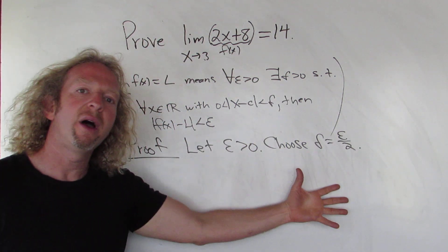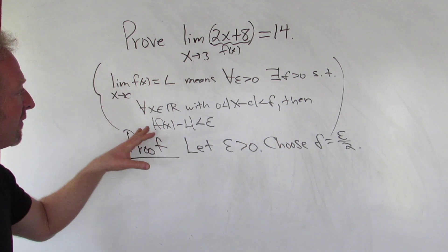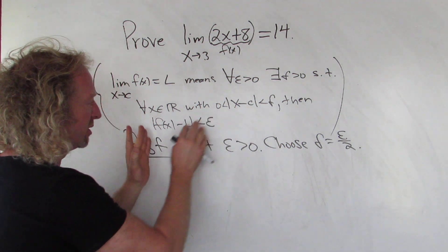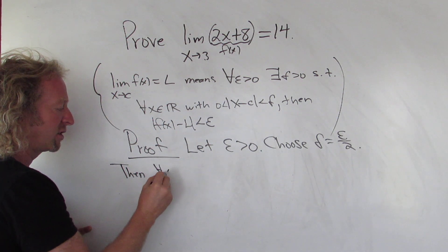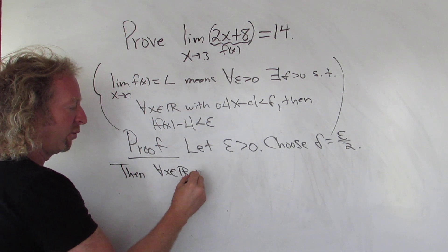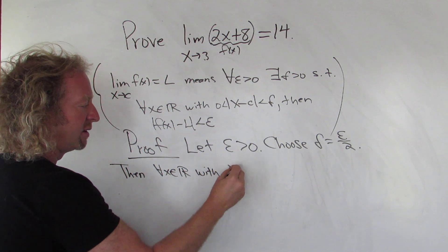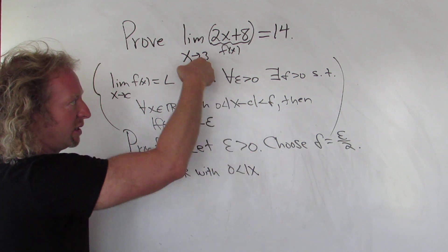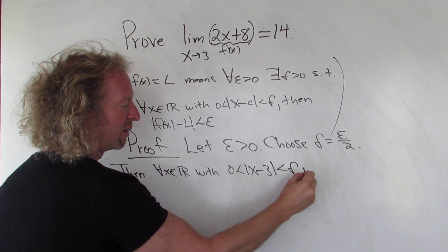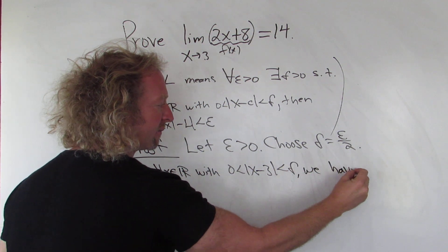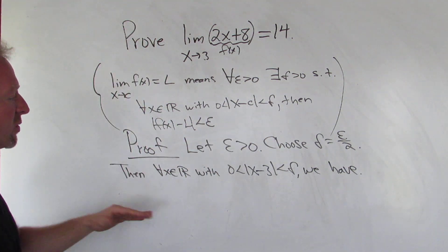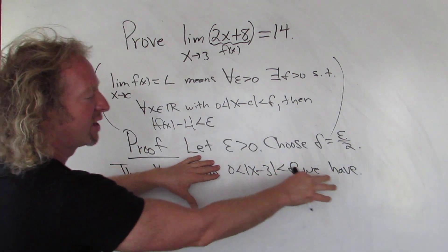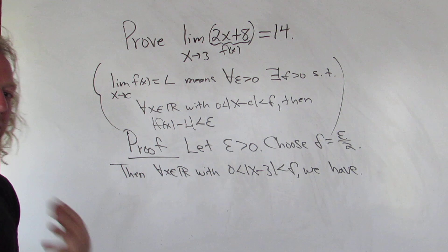So we've shown the existence of a delta. Now we have to say that whenever this is true, then this is true. So then for all x in R with the distance between x and c, so c here was 3, less than delta, we have, so I've just written this down. I'm just saying we're assuming this is true, right? You can also say if this is true, and then you say then. That also works.